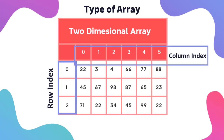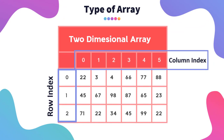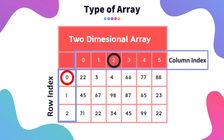If you have a two-dimensional array, we have two indexes: one is the column index, another is the row index. These indexes also start with zero. Whenever we refer to any element, we have to find the cross section of the row index and column index. For example, element 22 will have index 0, 0, and element 4 will have index 0, 2.